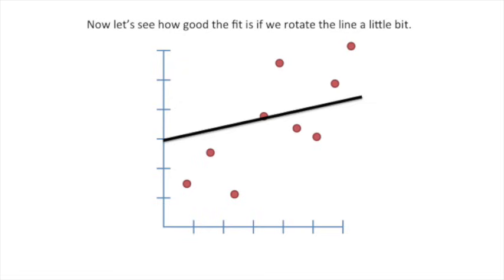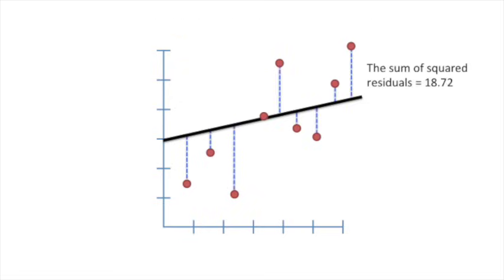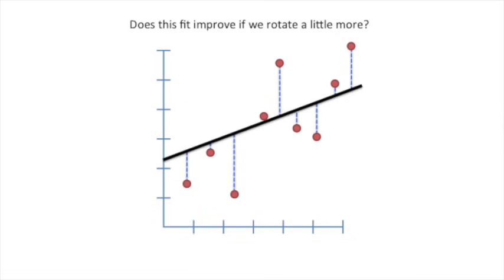Now let's see how good the fit is if we rotate the line a little bit. In this case, the sum of squared residuals equals 18.72. This is better than before. Does this fit improve if we rotate a little more? Yes! The sum of squared residuals now equals 14.05. That value keeps going down the more we rotate the line.